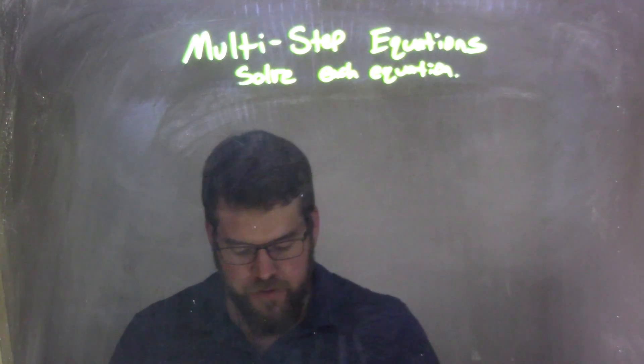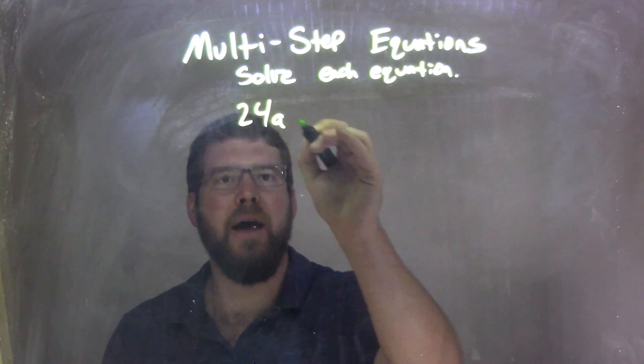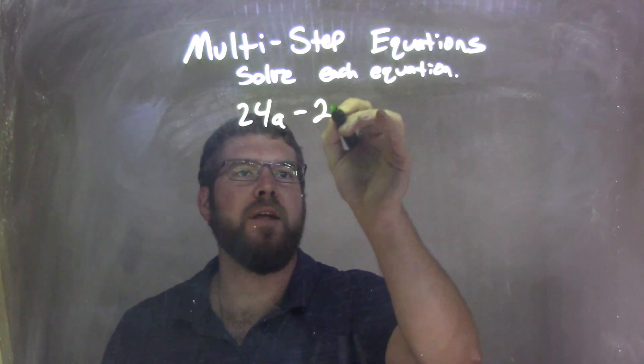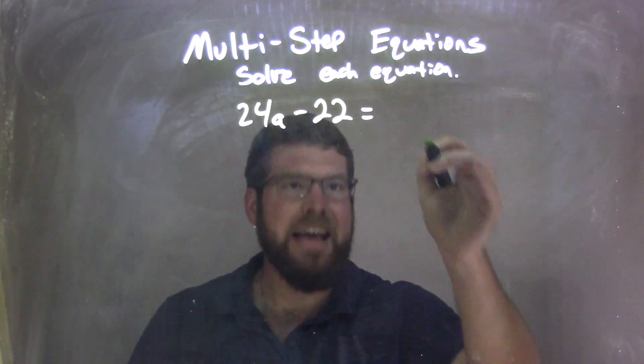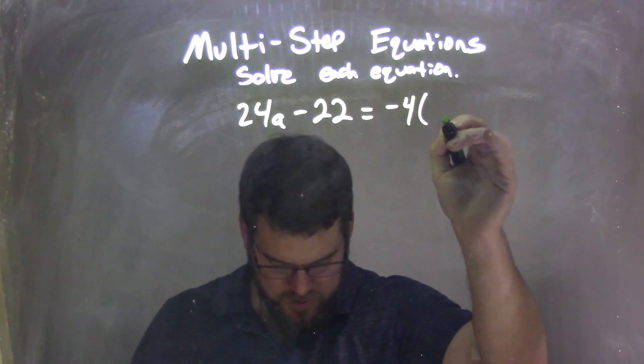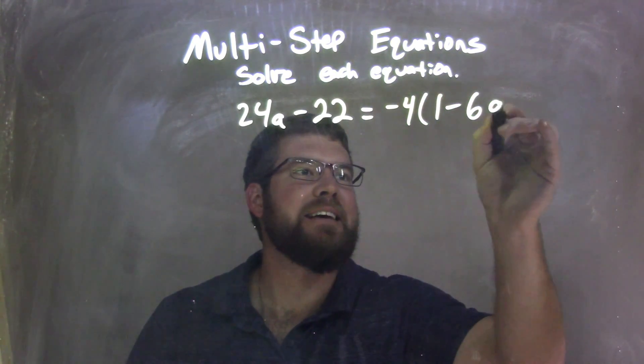So if I was given this equation: 24a minus 22 equals negative 4 times 1 minus 6a.